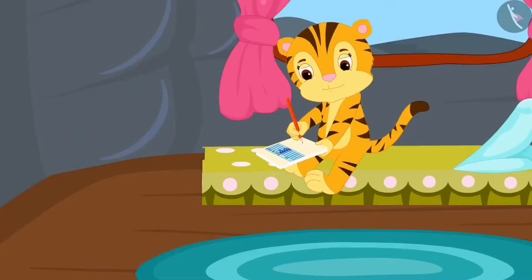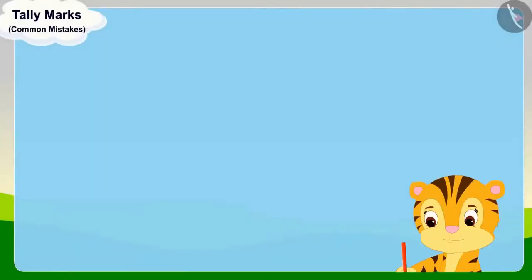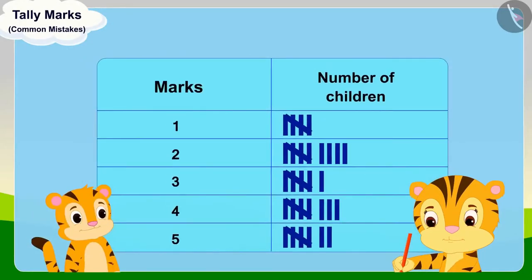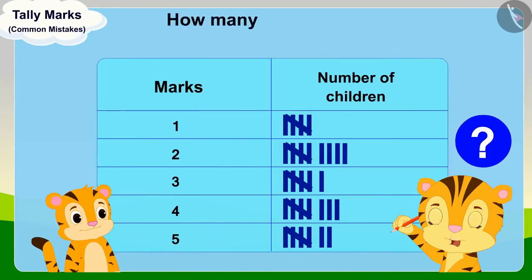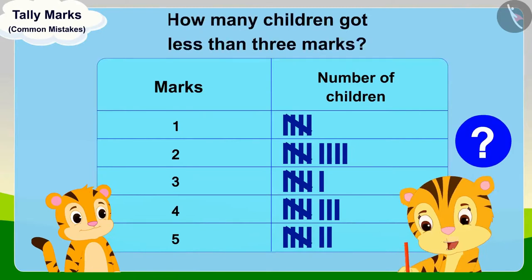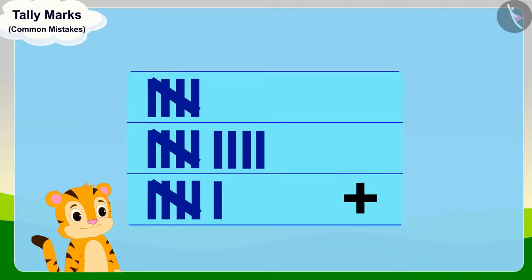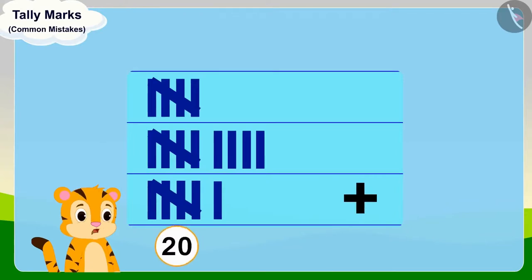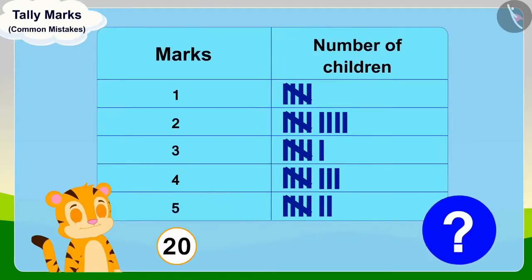When Mrs. Khan's table was completed, Shere Khan came there. Mrs. Khan showed him the table and asked, Shere Khan, can you see this table and tell me how many children got less than three marks? Shere Khan added the number of tally marks and quickly replied, 20 children got less than three marks. Children, is Shere Khan's answer correct? You can stop the video and find the answer.